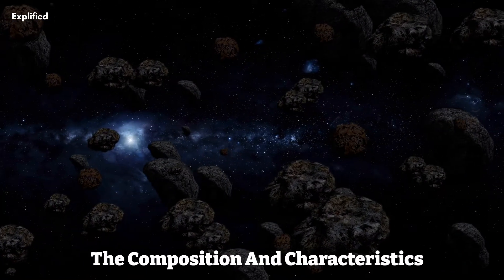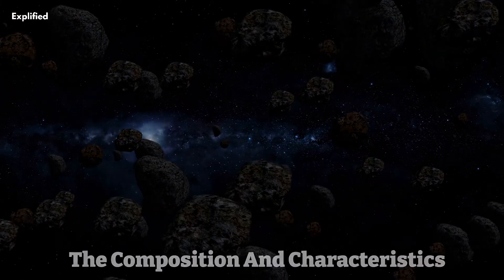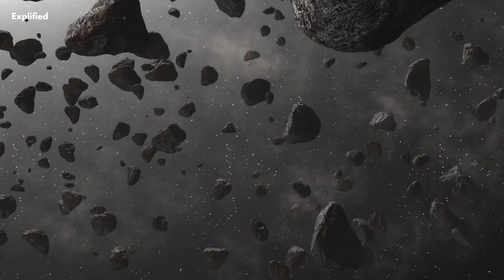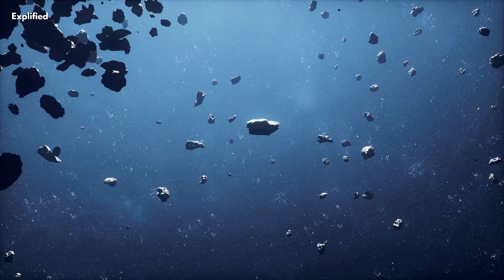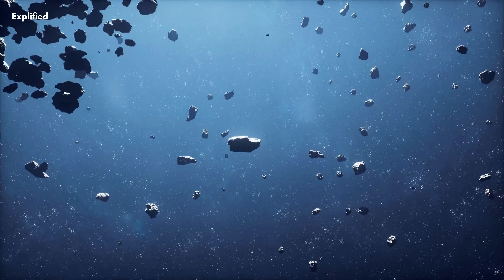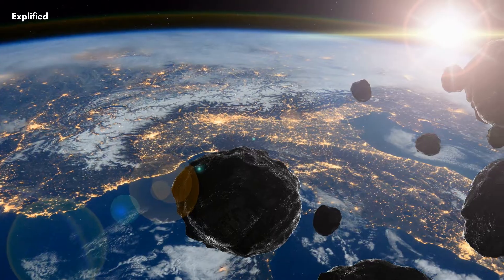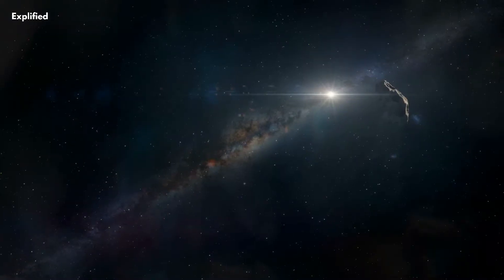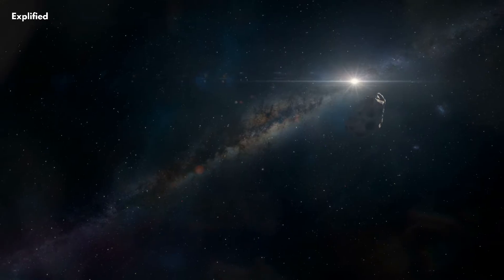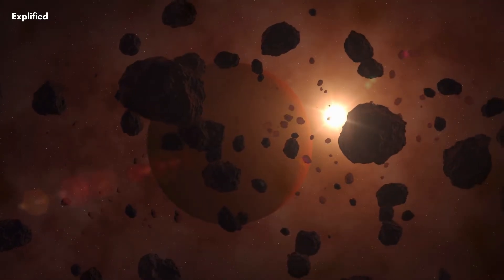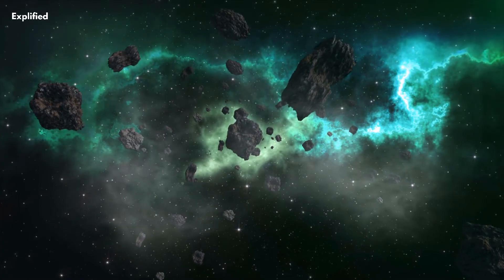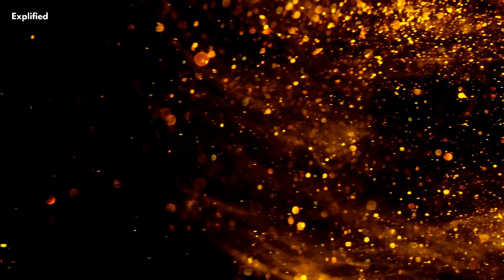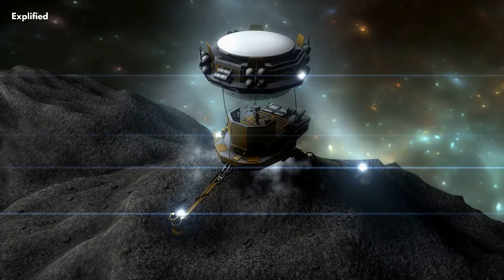Moving on, we have the composition and characteristics. The asteroids in the belt come in a wide range of sizes, from tiny fragments to objects several hundred kilometers in diameter. While there are millions of asteroids in the belt, their total mass is relatively small compared to the Earth or even our Moon. They are primarily composed of rocky and metallic materials, such as silicates, carbonaceous compounds, and metals like iron and nickel. Some asteroids contain valuable resources like water and precious metals, making them potential targets for future space mining endeavors.